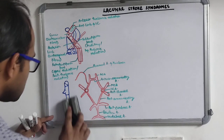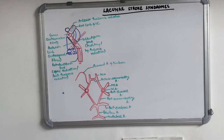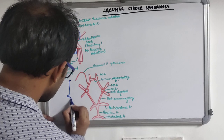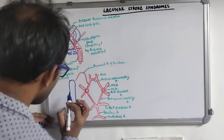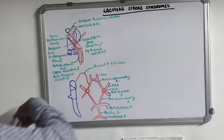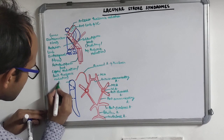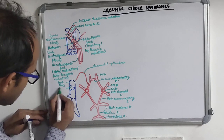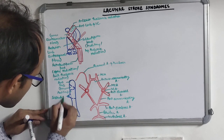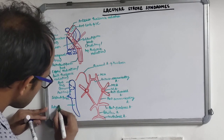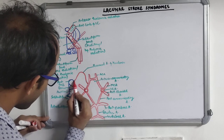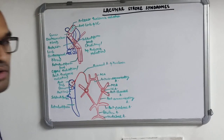Drawing the internal capsule larger, we have the anterior limb, the genu, the posterior limb, the sublentiform part, and the retrolentiform part. Regarding blood supply: the recurrent artery of Hübner gives off one branch each to the anterior limb and to the genu of the internal capsule.